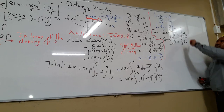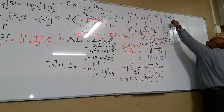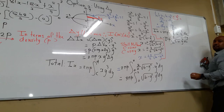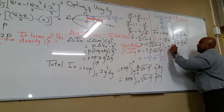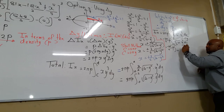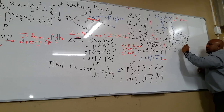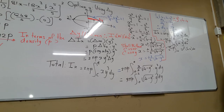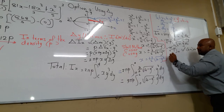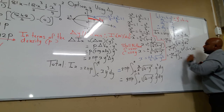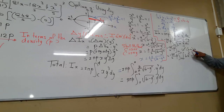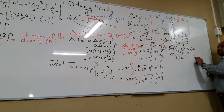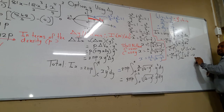Replacing y squared with 4 minus u: the integral becomes minus 3 pi over 2 times rho, integrated of u to the power half times 4 minus u du. Multiplying out using exponent laws: 4 times u to the power half minus u to the power 3 over 2, du.